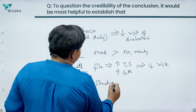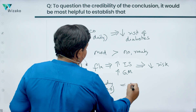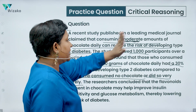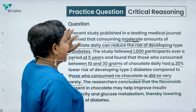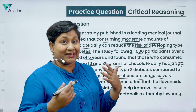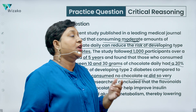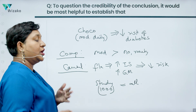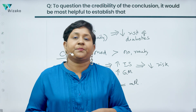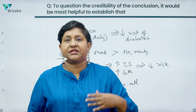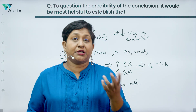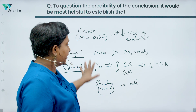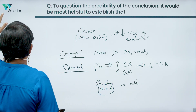You also have a generalization relationship in the argument, where the author goes from results true for the thousand study participants to something true for everybody. The conclusion just says consuming moderate amounts of chocolate daily can reduce the risk of type 2 diabetes, without specifying a particular group. It could be that the demographics of those thousand people are not representative of the world population — if so, the conclusion won't hold for everybody. Any of these will weaken the conclusion. Let's look at the answer options.